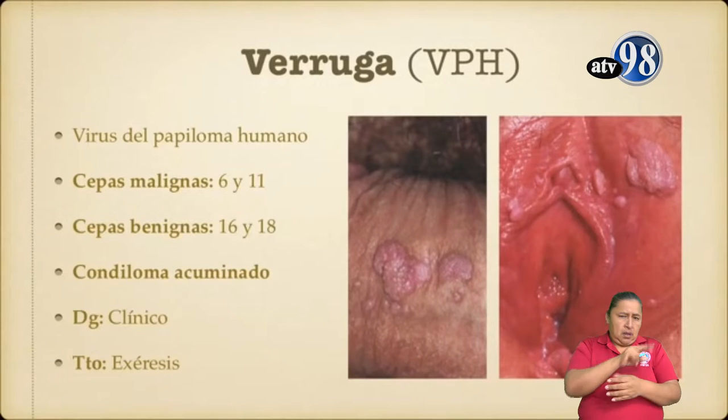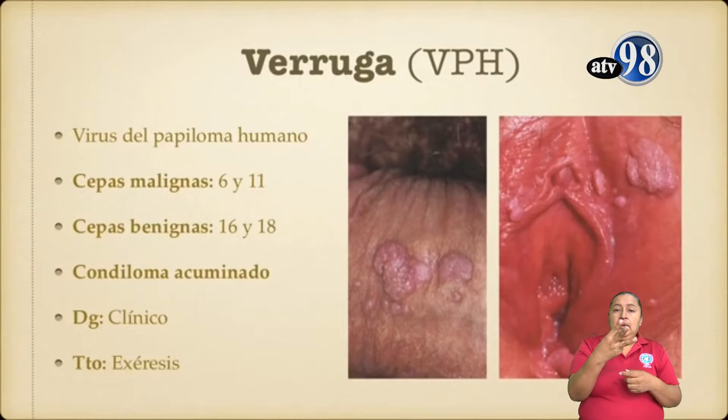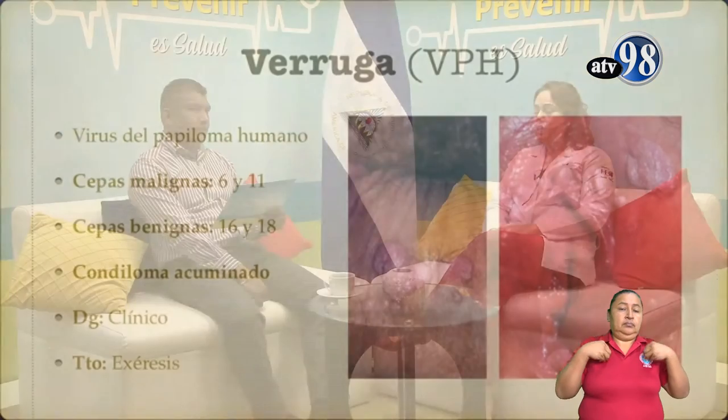That is why vaccines target those four most frequent serotypes. There are three vaccines recommended and approved by the FDA: Gardasil and Gardasil 9, and one called Cervarix. Cervarix targets strains 16 and 18. Gardasil covers 6, 11, 16, and 18. Gardasil 9 covers more virus types, but it is not available in Nicaragua.